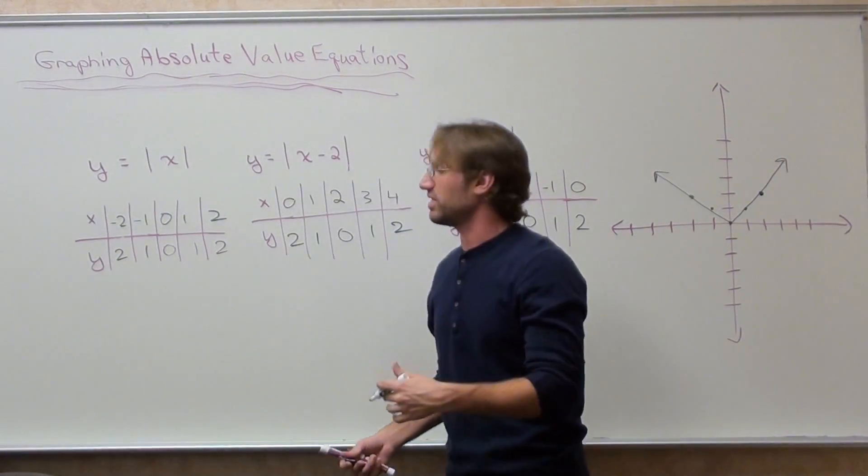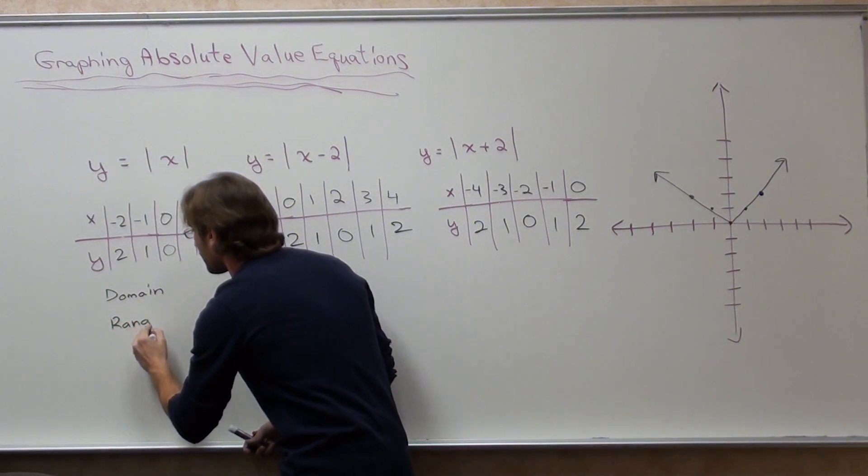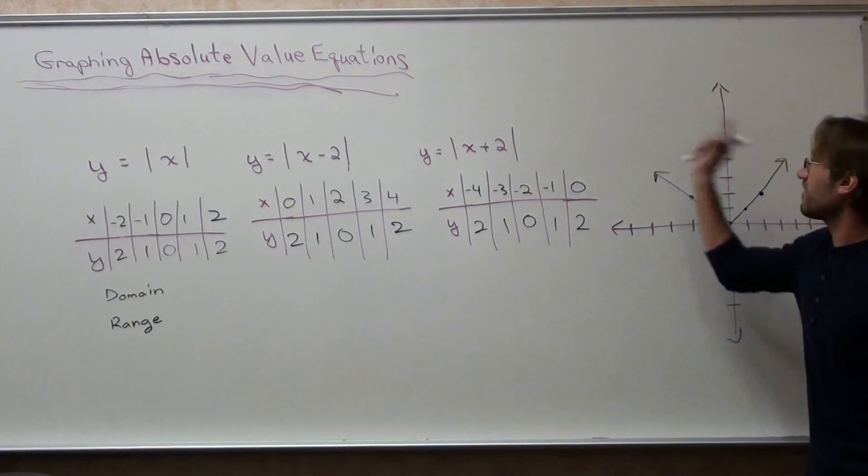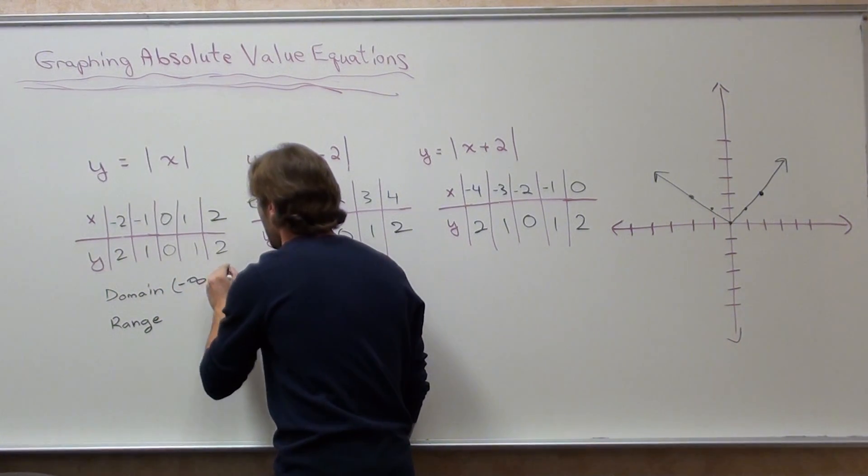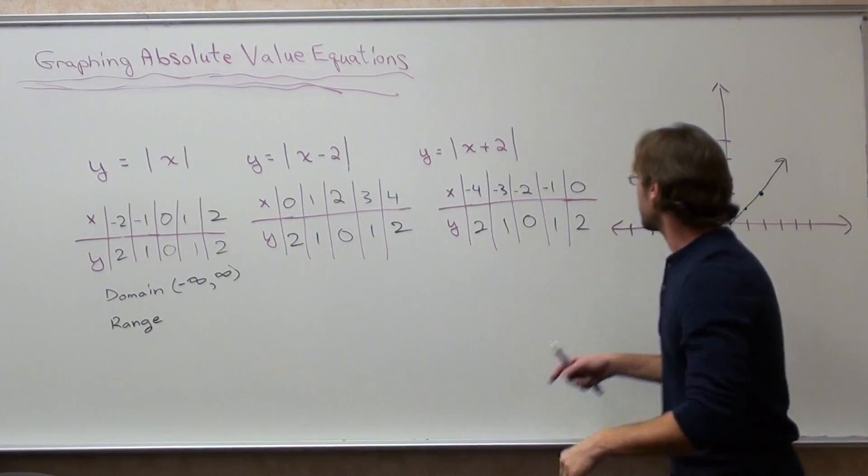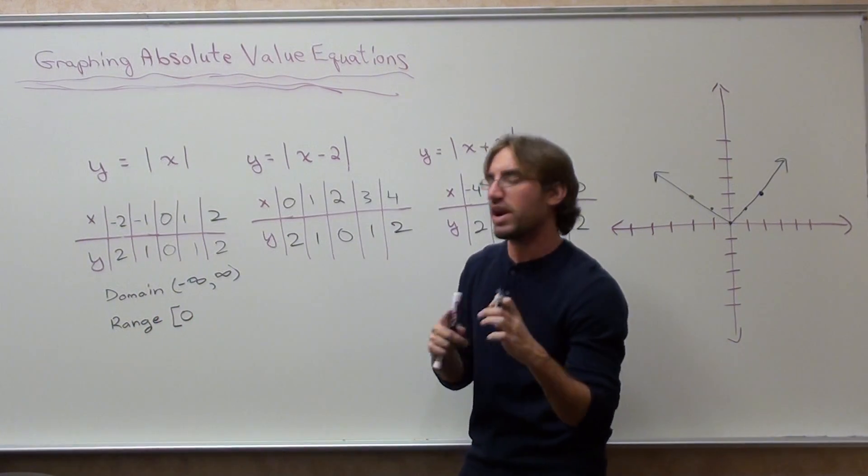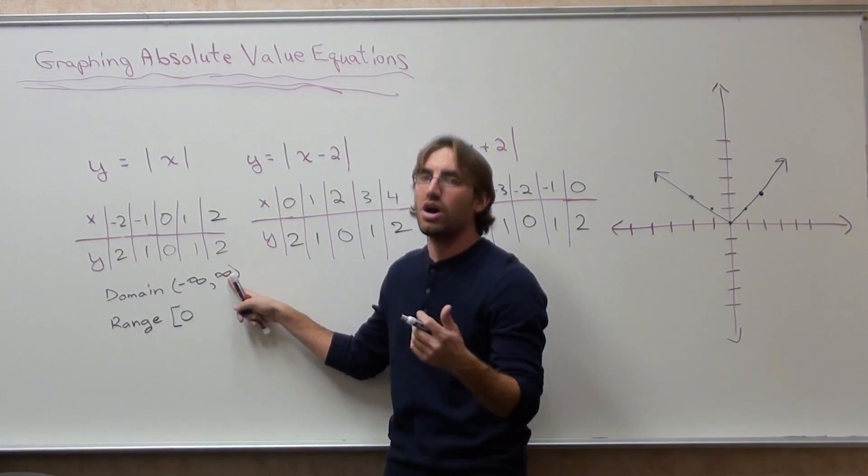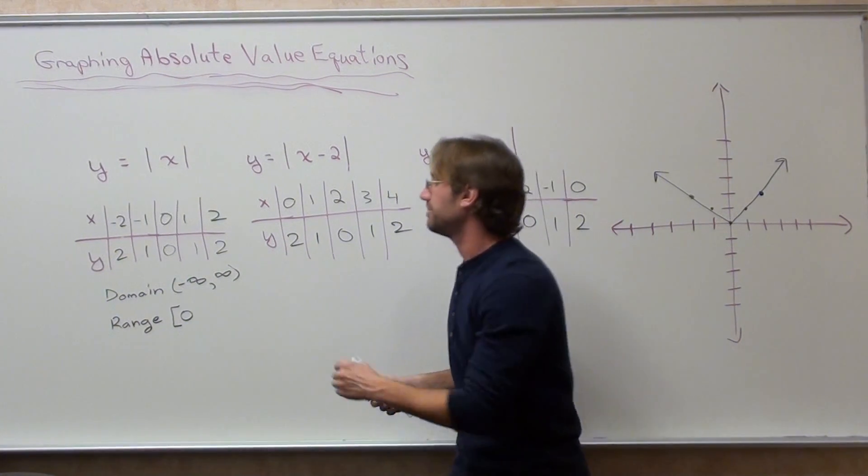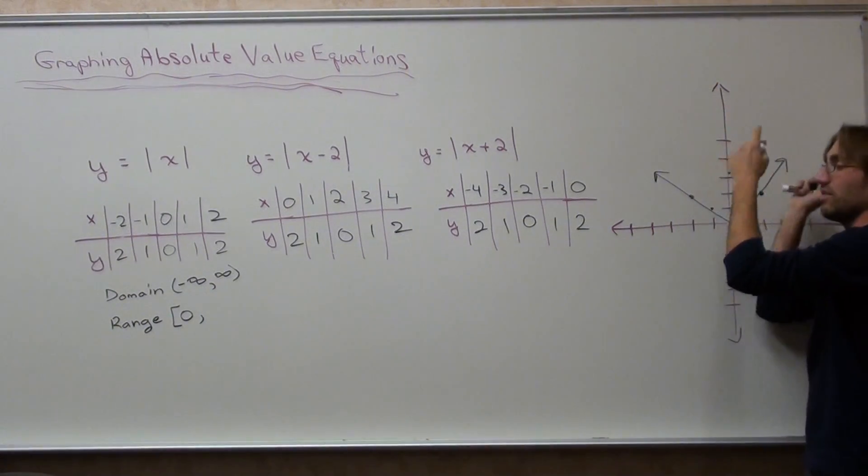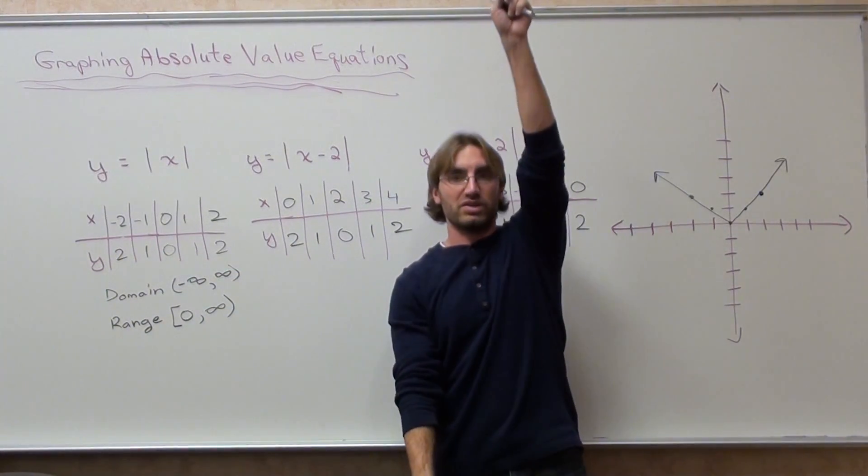Let me point out the domain and the range. The graph goes forever to the left and forever to the right, so it goes from negative infinity to infinity. Not true with the range. It doesn't keep going down, it stops at zero. And it includes the number zero, so we're going to use a square bracket. When it includes a number, it's a square bracket. When it doesn't include a number, it's a circular bracket. It can never reach infinity, that's why we always put a rounded bracket. The range goes up forever, so it's infinity.